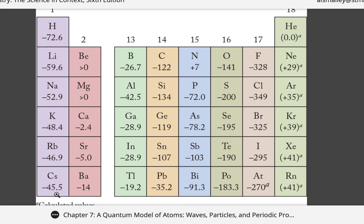Interestingly, we also have some energy released when we make anions with group one elements. But do we ever see these as anions? Probably not. So even though energy is released, that doesn't necessarily mean that's a normal state for these materials in nature.